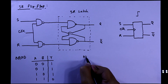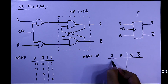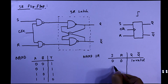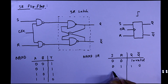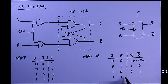The truth table of the NAND gate SR latch: when both S and R are zero, then it is invalid. When S is zero and R is one, then Q is one and Q-bar is zero. When S is one and R is zero, then Q is zero and Q-bar is one. When both are one, then the NAND gate SR latch will be in memory state.